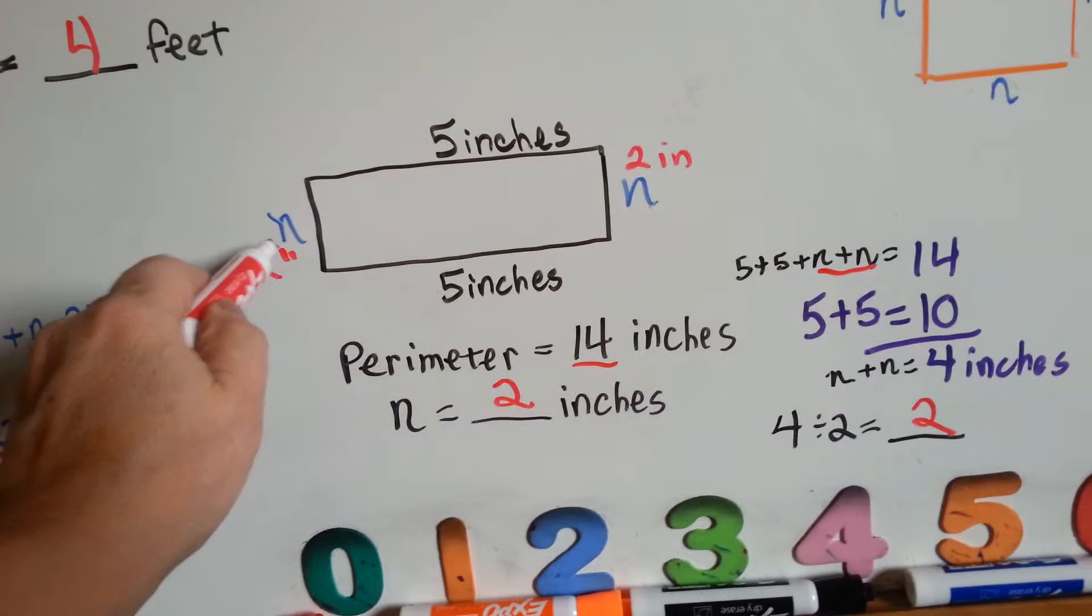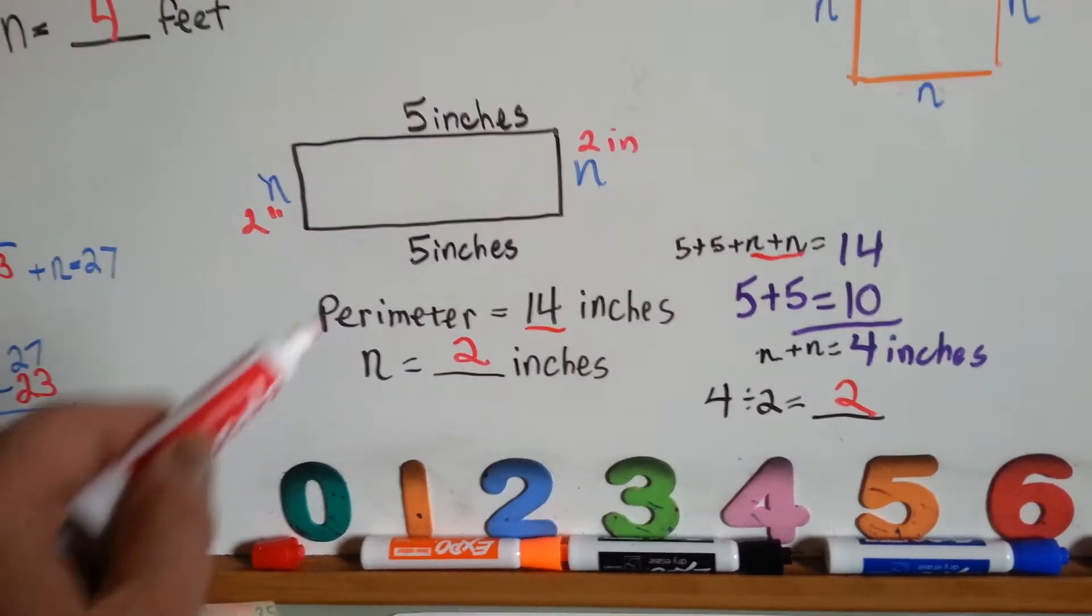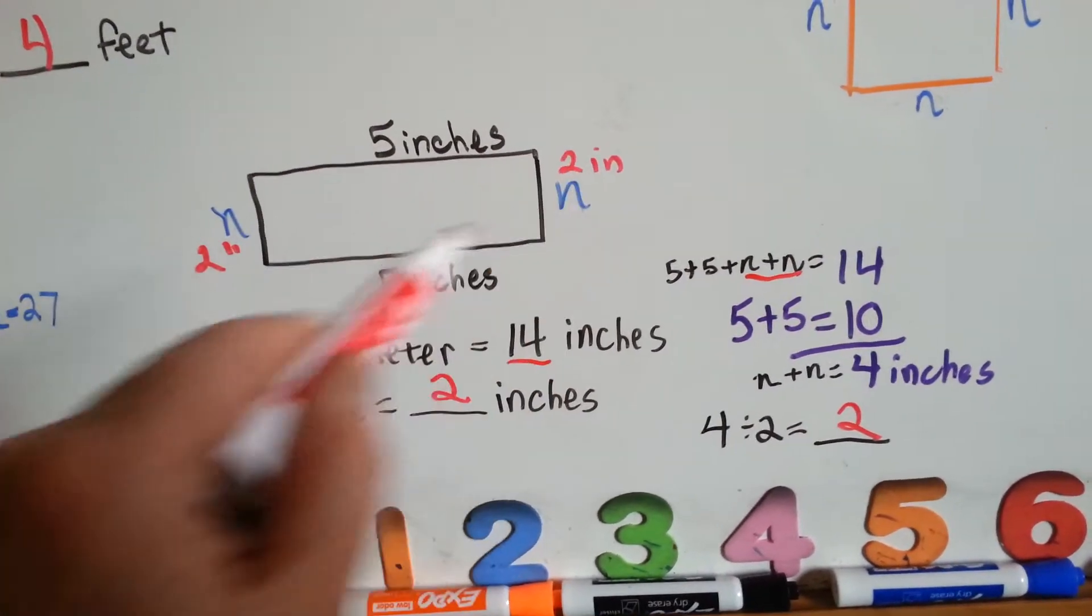Remember the little 2 little lines mean inches? So that's 10, 11, 12, 13, 14. It works. Alright, let's try this one.